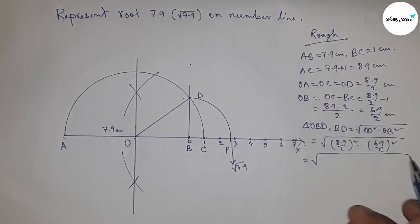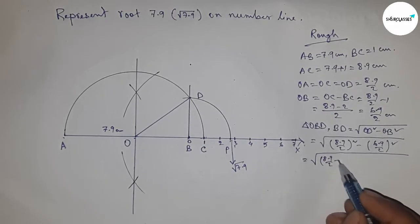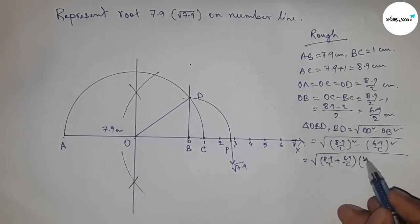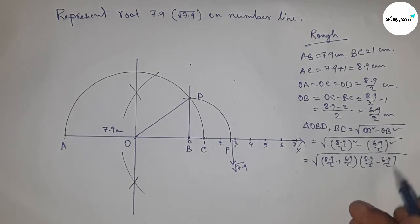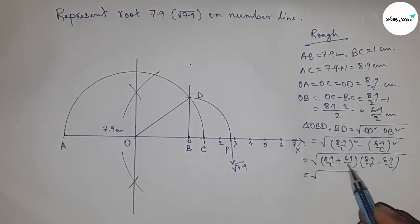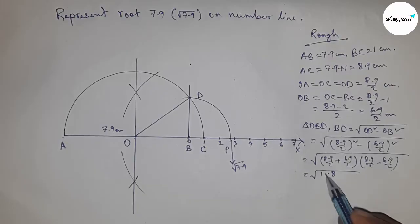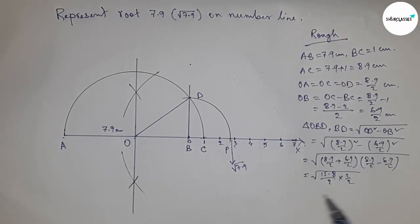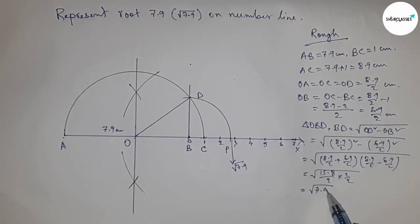Now I'm going to use the formula a squared minus b squared equals (a plus b)(a minus b). Applying the formula, this is 15.8 by 2 times 2 by 2, so this is 7.9 times 1, which is root 7.9 centimeters.